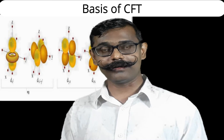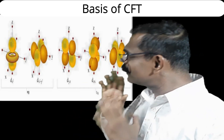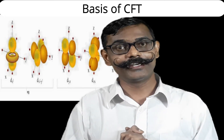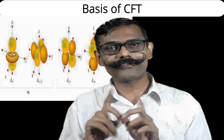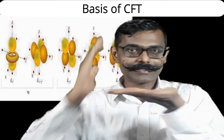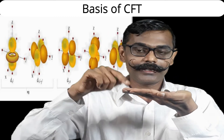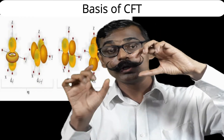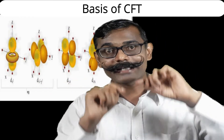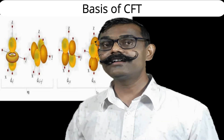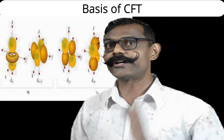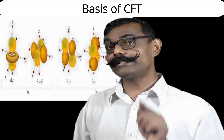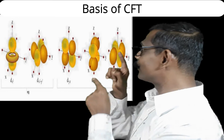The next orbital is dxz. Here also the lobes are in between axes, but the axes are x and z. The lobe is between positive x and positive z, making a 45-degree angle to both x and z axes. So the dyz orbital is in the yz plane and the dxz orbital is in the xz plane.